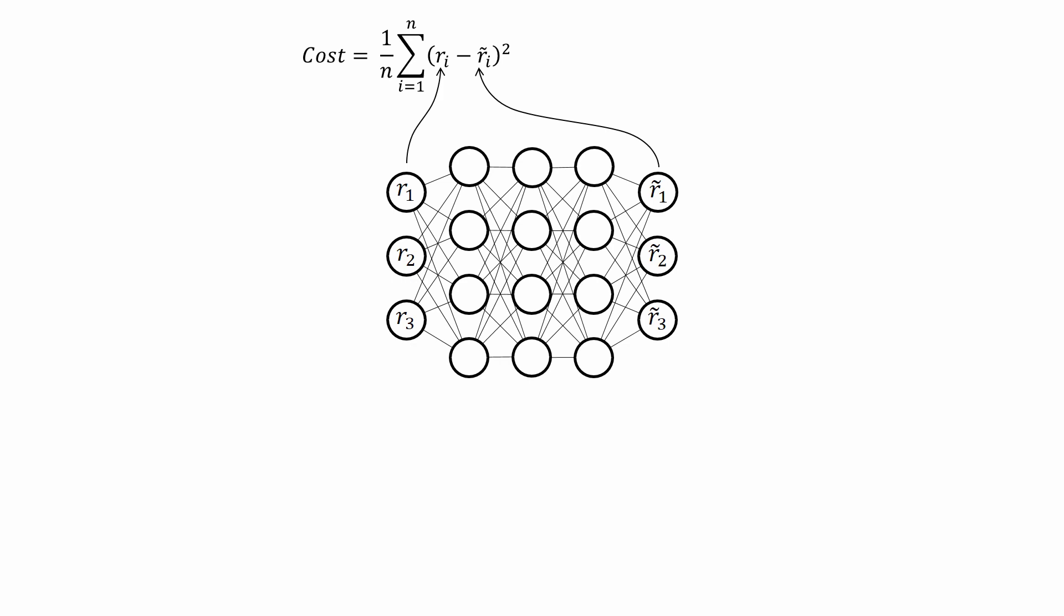The clue of this procedure is that we introduce a bottleneck in the neural network architecture, in this case with two neurons. Now the network is forced to funnel all the information through this bottleneck. The left part, the encoder part of the network, projects the data to a two-dimensional space, and the right part of the network, the decoder part, is optimized to reconstruct the full, in this case three-dimensional, data.